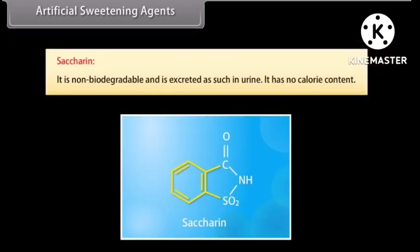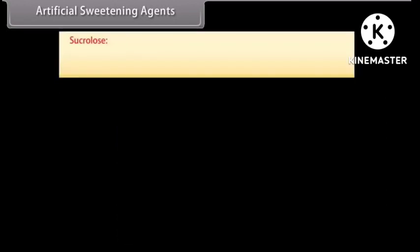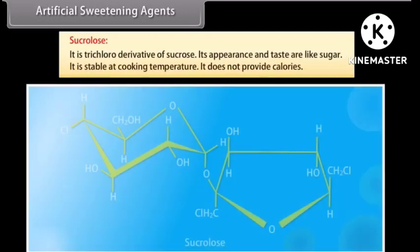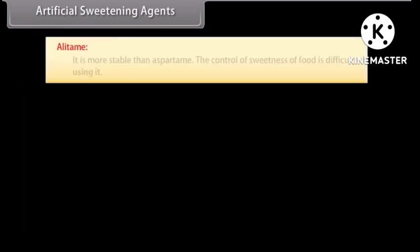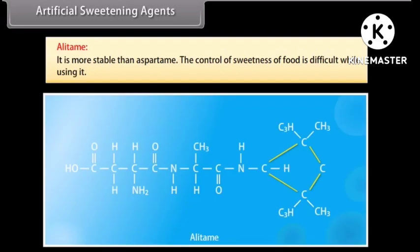Saccharin is non-biodegradable and is excreted as such in urine. It has no calorie content. It has proved to be a lifesaver for countless diabetics and is used for those who need to control intake of calories. Sucralose is a trichloro-derivative of sucrose — its appearance and taste are like sugar, it is stable at cooking temperature, and it does not provide calories. Alitame is more stable than aspartame; however, the control of sweetness of food is difficult while using it.